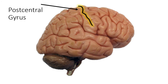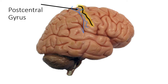Behind the central sulcus is the post-central gyrus. That's in the parietal lobe, and physiologically that is what we refer to as your primary somatosensory cortex. Sensations — like if I touch my elbow, that signal winds up in that area of the brain. The fact that I can feel my shirt on my body, that signal ends up somewhere in that gyrus right behind the central sulcus. That's it for the cerebrum.